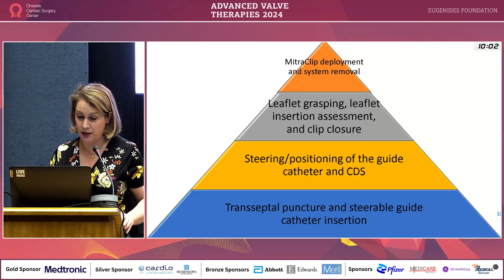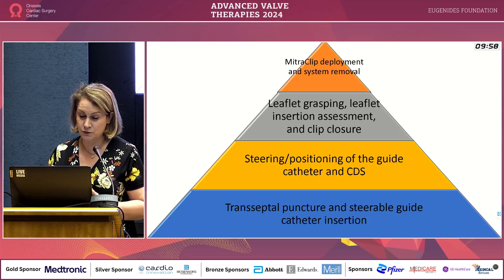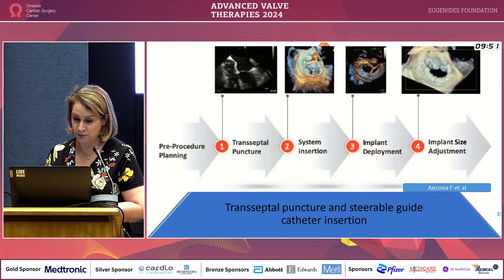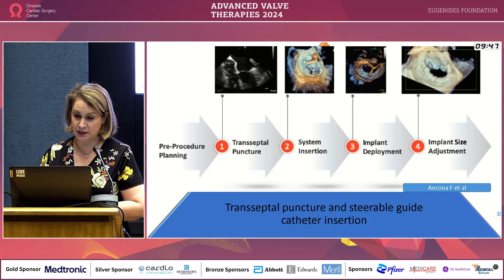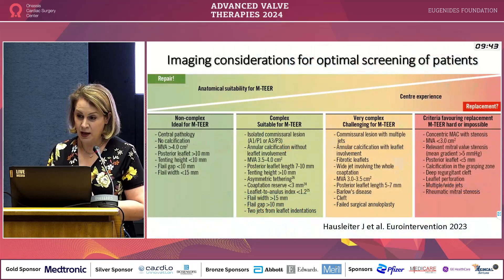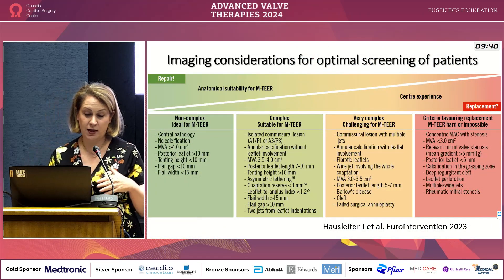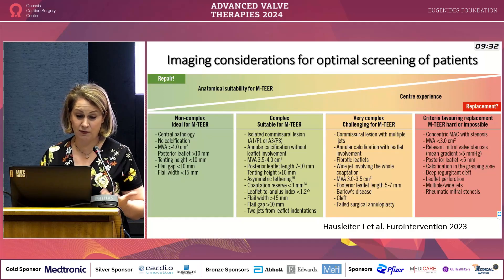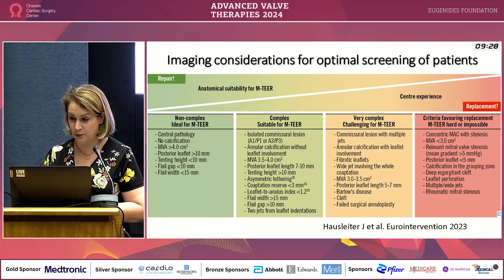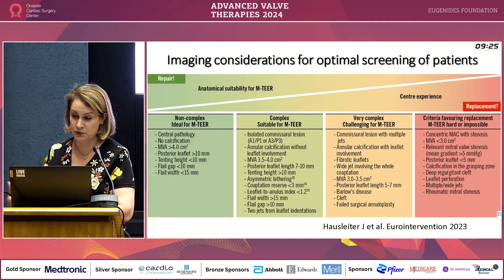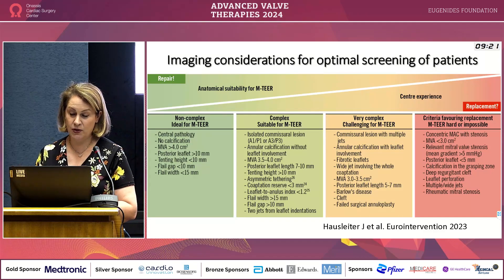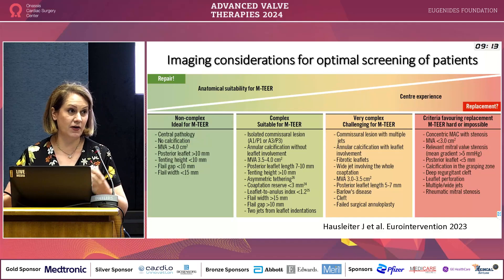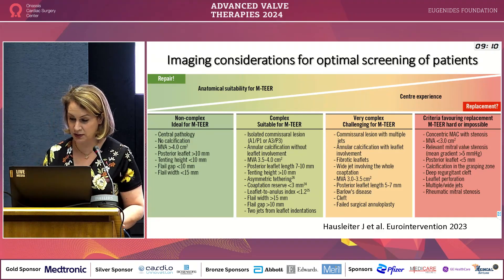There are four fundamental steps for mitral clip deployment, starting from the transeptal puncture up to clip deployment. Patients anatomically suitable for edge-to-edge repair are those in the green zone — where mitral valve area greater than 10, tenting height, flail gap, and flail width are assessed. When there is calcification, complex jets, or a deep regurgitation cleft, the case is considered a very complex edge-to-edge repair and may be more suitable for replacement.